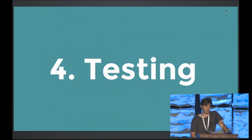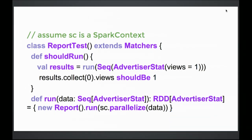For testing Spark jobs, we import a local SparkContext variable. Our test class has a run method that takes a sequence of our case class lines representing our logs. Inside, we call the parallelize method, which consumes a sequence and returns an RDD — that's how we pass test objects into our report. Since the run method returns an RDD, Spark has a collect method to turn it back into an array. So in the test you just call collect, then assert that, say, the first element's views should equal one. It makes testing Spark jobs really easy.